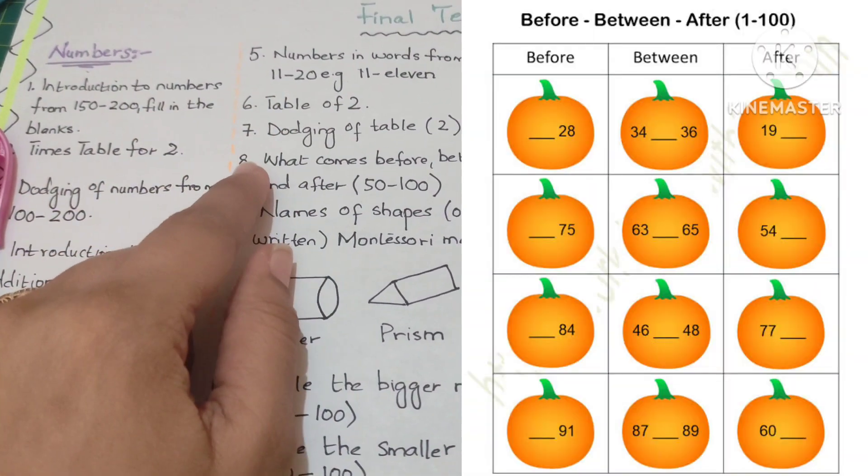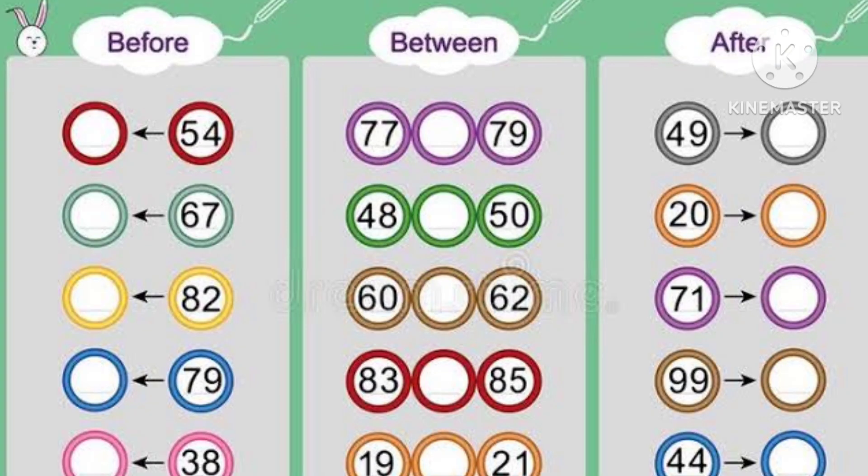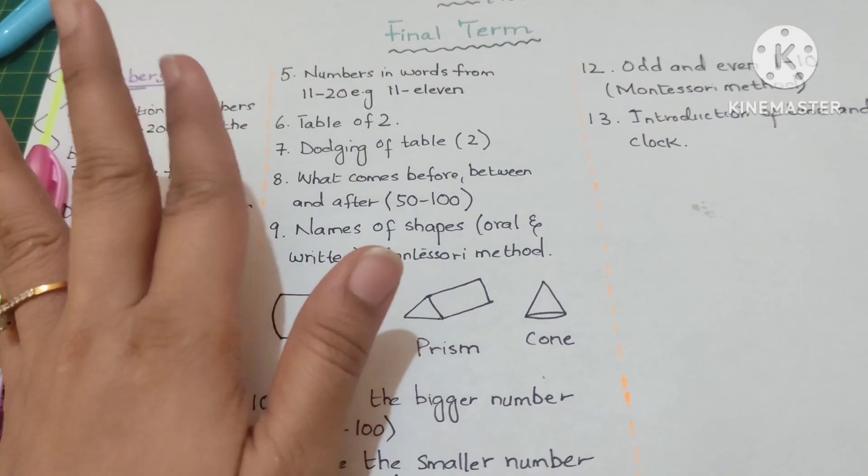What comes before, between and after? This is done basically for them to actually learn the sequence from 50 to 100. That's why it's done before, between and after.